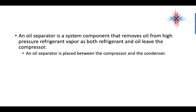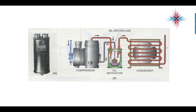An oil separator is placed between the compressor and condenser — in other words, on the discharge line. Here is an example with two pictures: the one labeled A is an oil separator, and B shows how it's placed into the system.